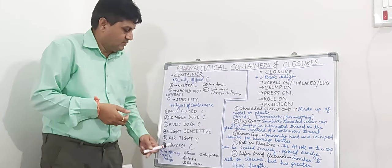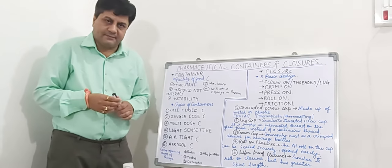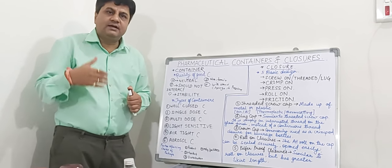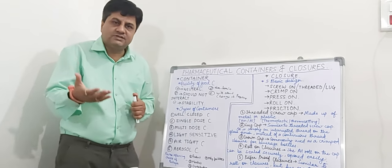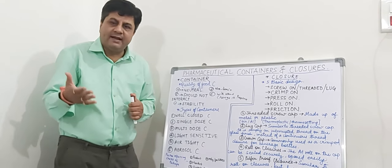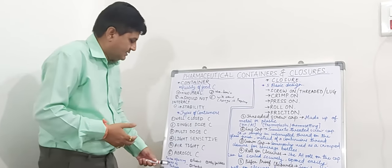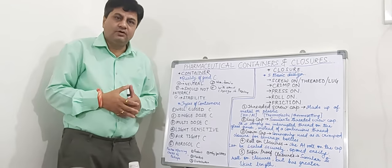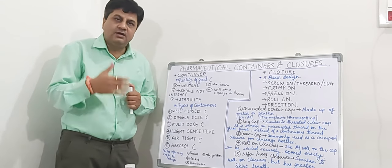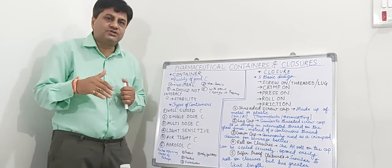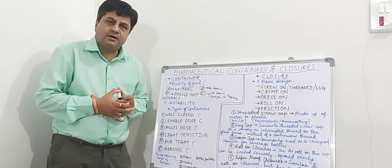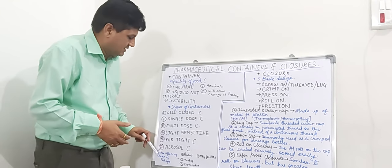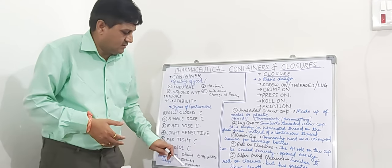The first factor is the product — that is, the type of product, whether it is used for an infant or an adult, or the type of dosage form such as tablet, capsule, or parenteral. Depending upon the product, we have to select the packaging. The second factor is the market — whether that market is domestic, local, or international, and whether we need to display or sell the product. According to that market, we have to select the packaging.